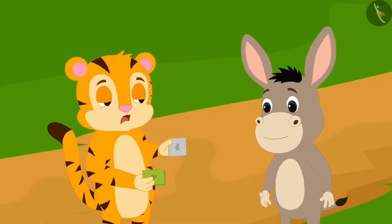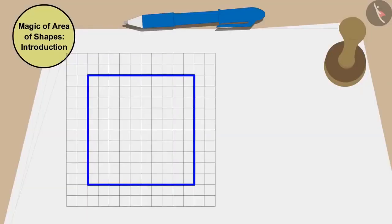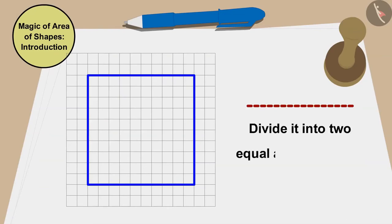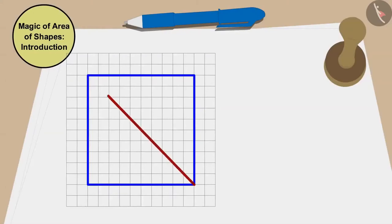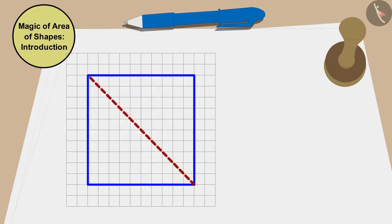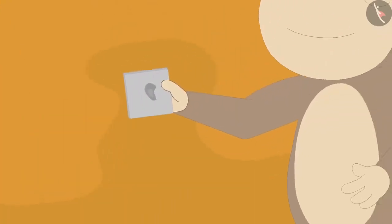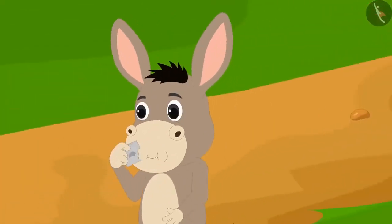Sher Khan was shocked. Can you divide the shape of this cashew barfi by just drawing a straight line into two equal area triangles? You can find a solution by stopping the video. Well done children, your answer is absolutely correct. We can make this line in this way too. Sher Khan gave the barfi to Bhoala and Bhoala ate it happily.